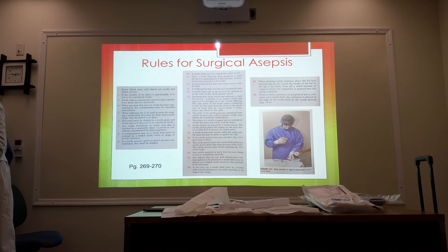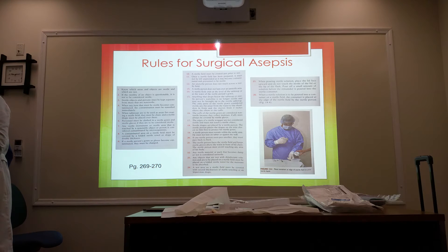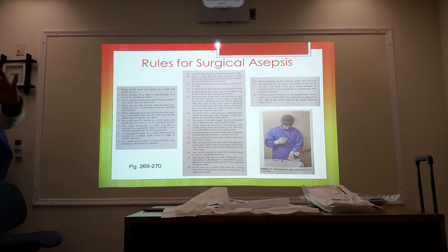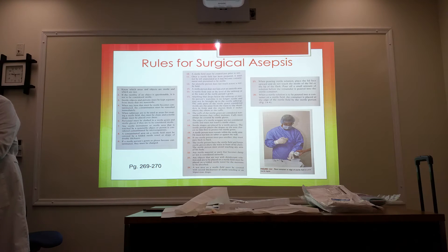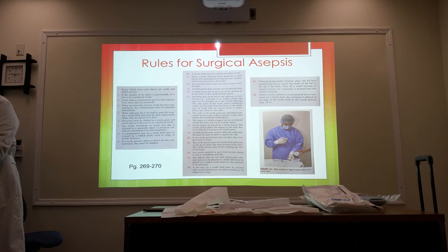Number five: tabletops used as areas for a sterile field must be cleaned and a sterile drape placed over them — this is what we did earlier. Number six: personnel must be clothed in sterile gown and sterile gloves to be considered sterile. Number seven: any sterile instruments or sterile area touched by a non-sterile object or person is considered contaminated.